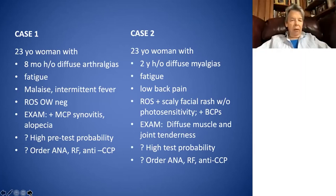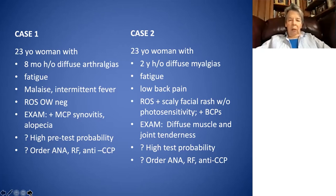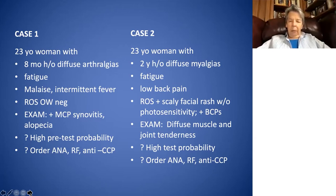I wanted to start off with some clinical cases very briefly. I'm going to go through them quickly. We have two 23-year-old women with similar stories. The first has an eight-month history of diffuse arthralgias; the second a little bit longer. Both had fatigue. The first patient had malaise and intermittent fever; the second had low back pain. The review of systems was negative for the first patient. The second complained of a scaly facial rash, but no photosensitivity, and she was on birth control pills. The first patient was on no medication.